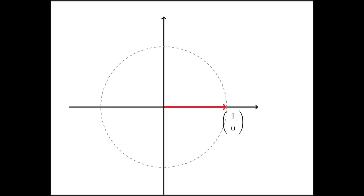And if we now rotate that unit basis vector through an angle theta, we get this vector right here. That's the transformed vector. That's r sub theta of (1, 0).